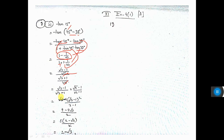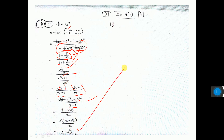Now rationalize by multiplying numerator and denominator by the conjugate (√3 - 1). The denominator becomes (√3 + 1)(√3 - 1) = A² - B² = 3 - 1 = 2. The numerator is (√3 - 1)² = √3² + 1² - 2·√3·1 = 3 + 1 - 2√3 = 4 - 2√3. Taking 2 common and cancelling, the answer is 2 - √3.